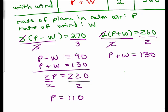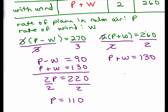Now what's P stand for? It's the rate of the plane in calm air. So that is 110 miles per hour. That seems reasonable for a small plane, maybe not a jet, but a small plane.